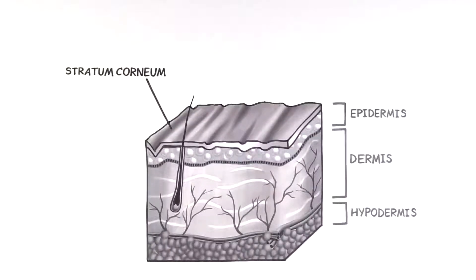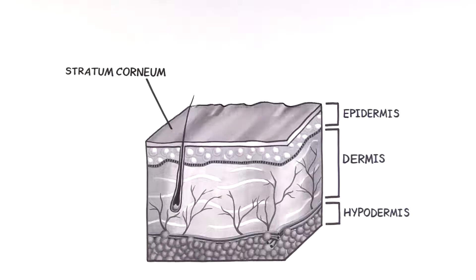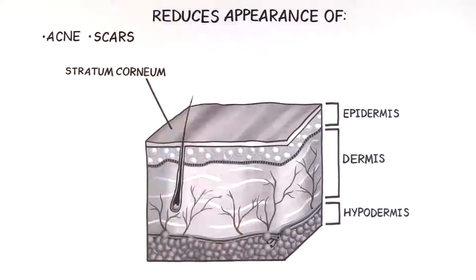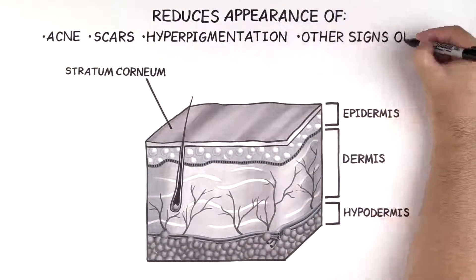Chemical peels use an acid and solution to peel away the outermost layers of the skin to improve its texture. They are one of the most effective ways for reducing the appearance of acne, scars, hyperpigmentation, and other signs of aging.